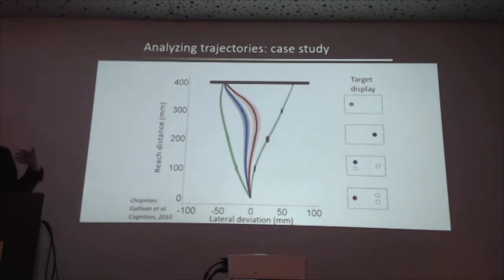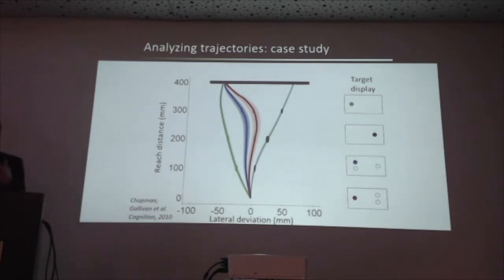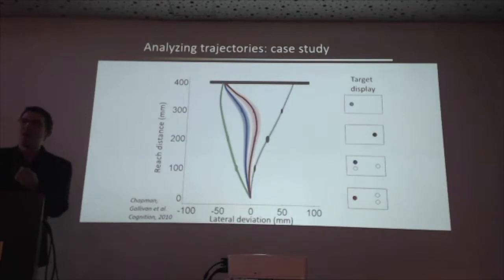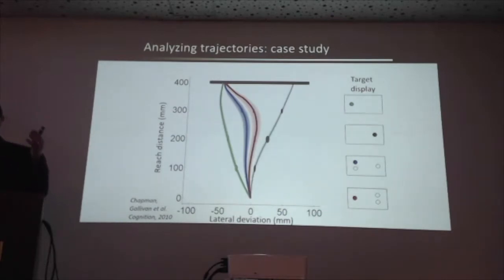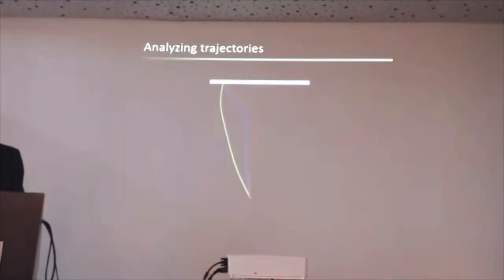Not surprisingly, when you put up a single target, people can move straight towards it. The much more interesting case is what happens when you put up two targets — here the hand path reflects averaging. We thought this was a very nice behavioral correlate of an averaging of spatial trajectories, which would explain the neural recordings that Paul had seen. This extends to cases where we bias the trajectories by putting more targets on one side of space than the other. But I'm not really going to talk to you today about this whole line of research. Instead I'm going to take the approach of how do we actually dig into this trajectory.